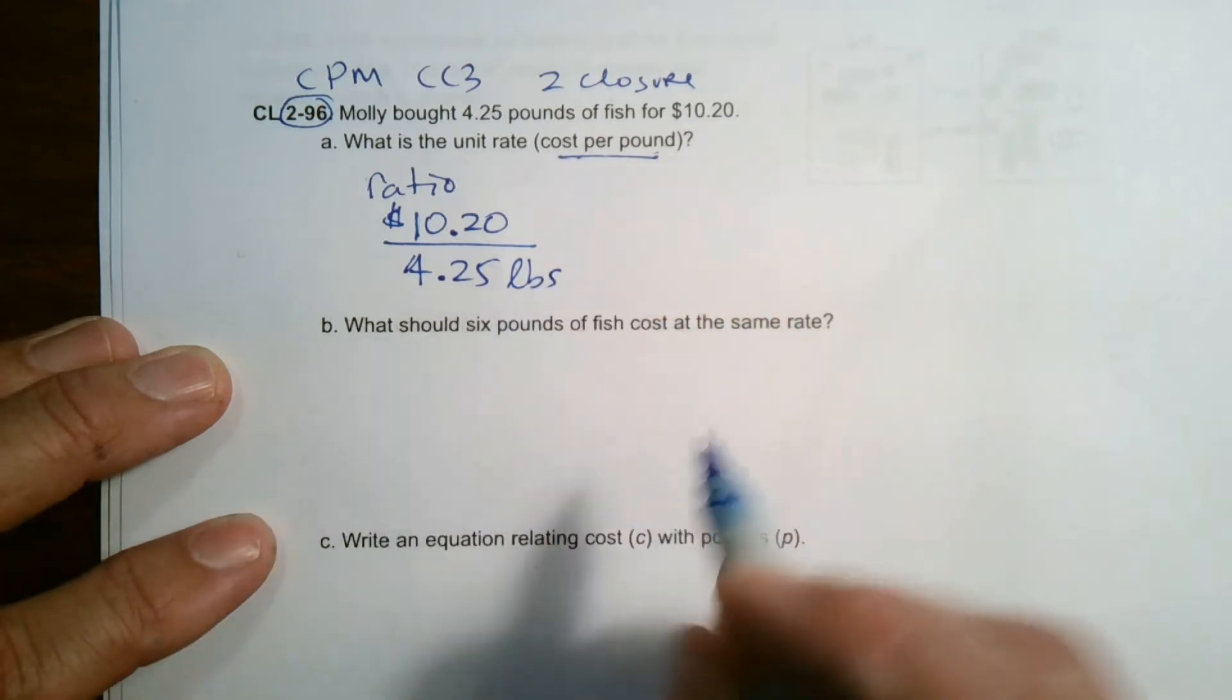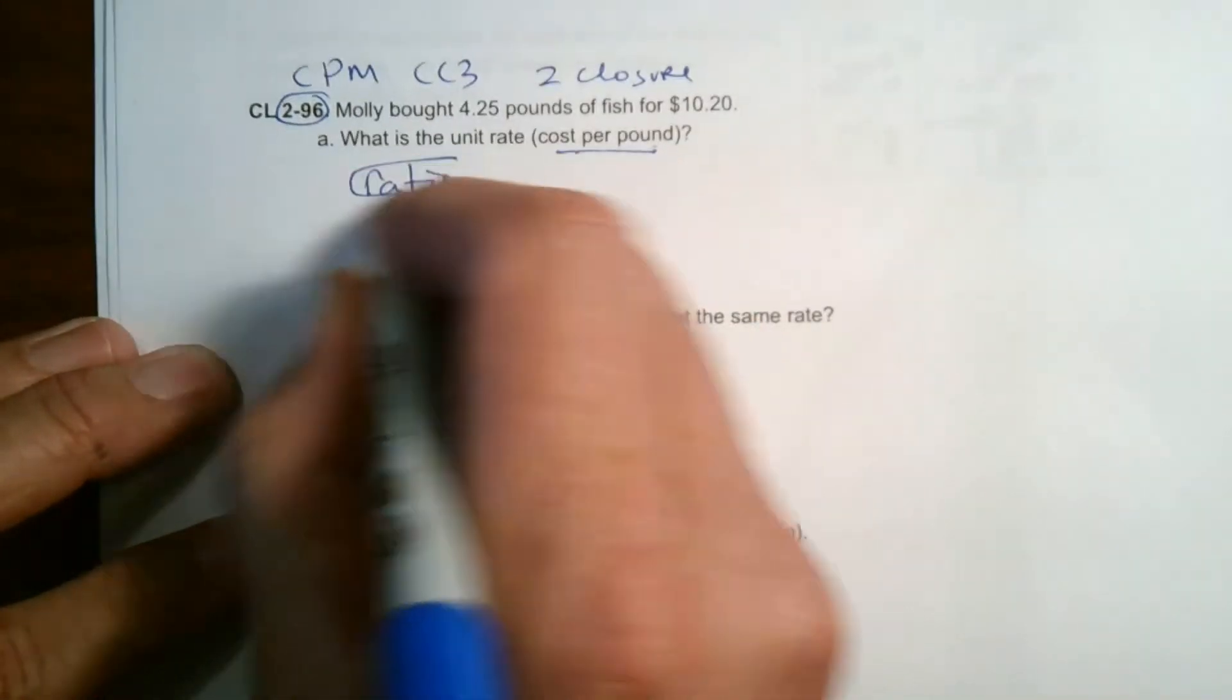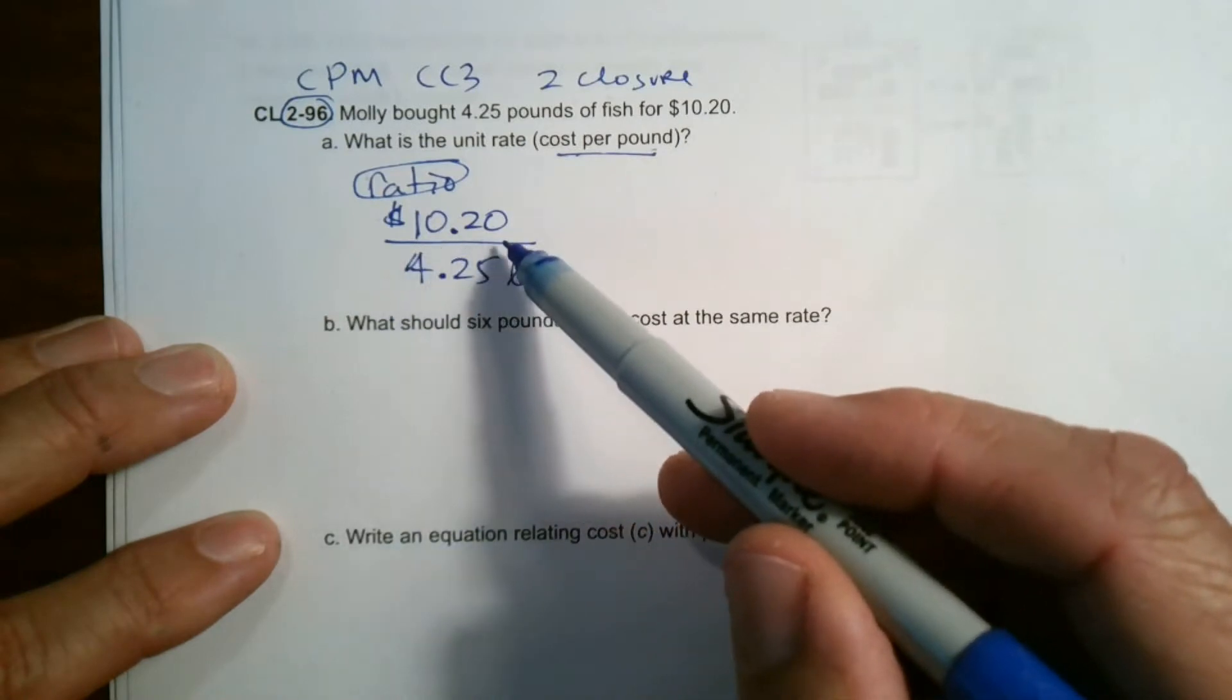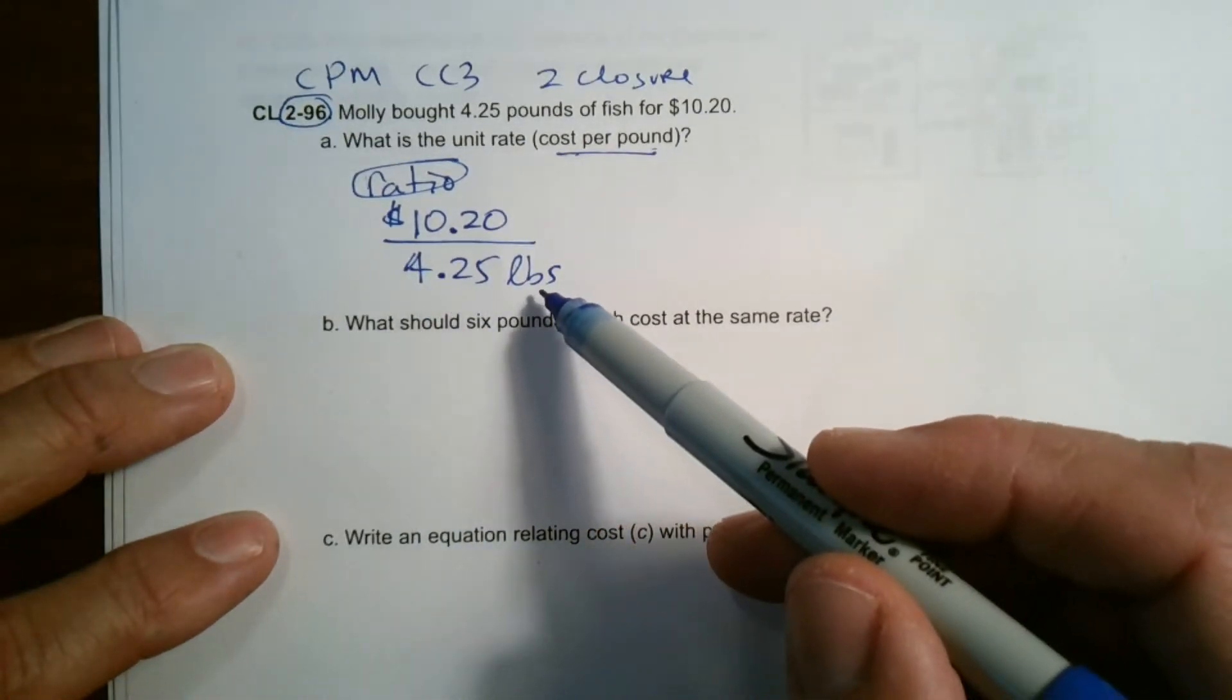So this is my ratio, right? That's my ratio that I have that they gave me of $10.20 for 4.25 pounds of fish.